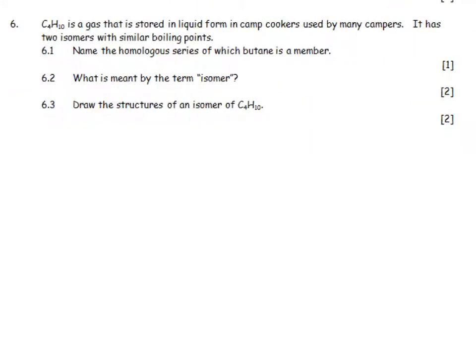C4H10 is a gas that is stored in liquid form in camp cookers used by many campers. It has two isomers with similar boiling points. Name the homologous series to which butane is a member: it is alkane. What is meant by the term isomer? Same molecular formula, different structural formula.